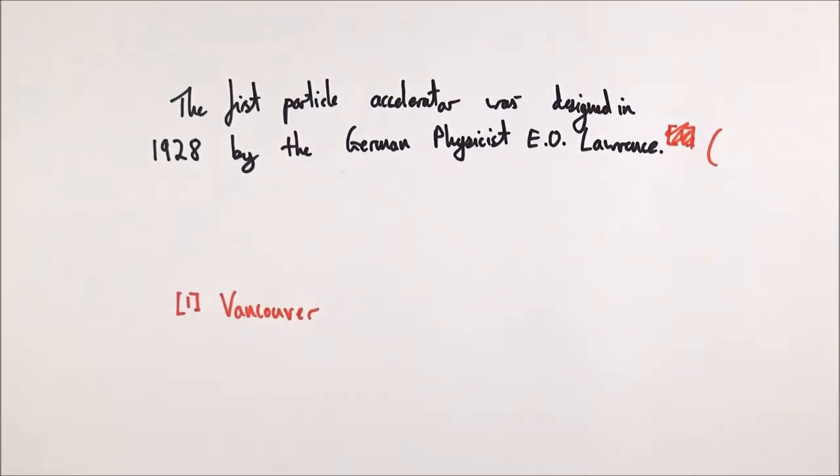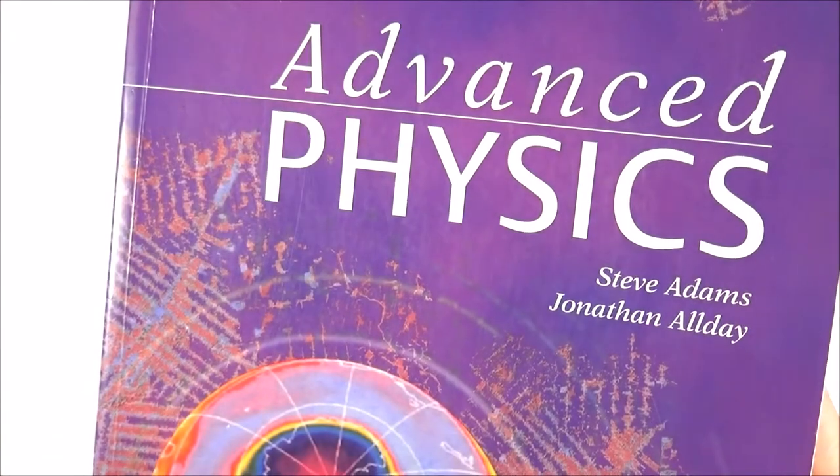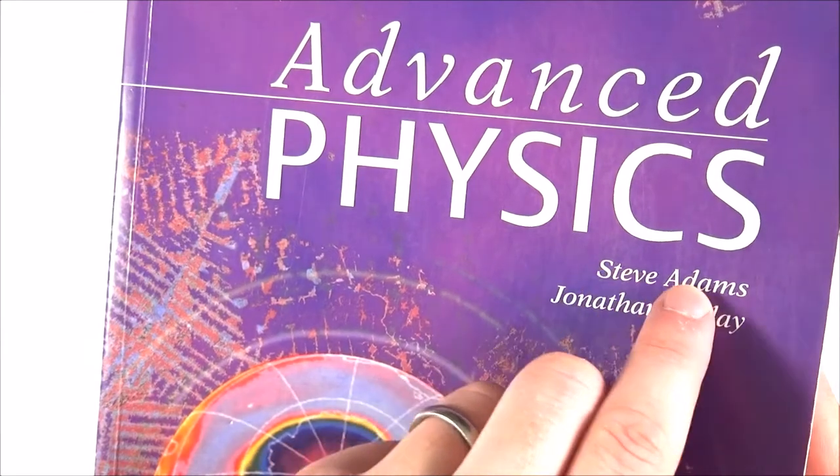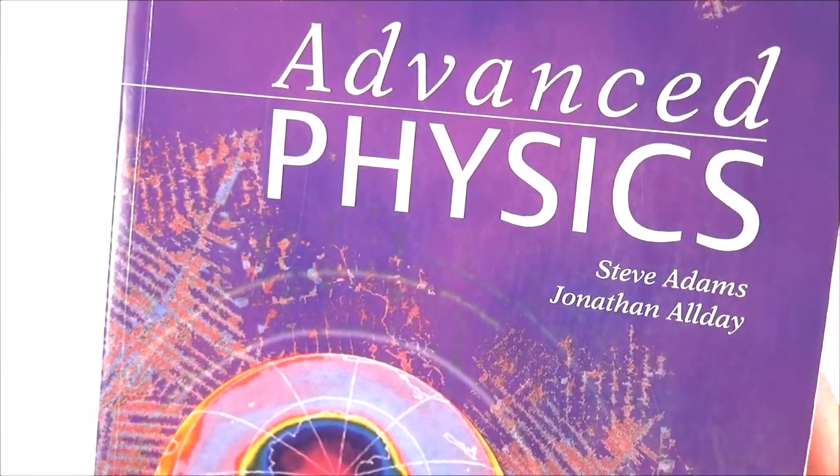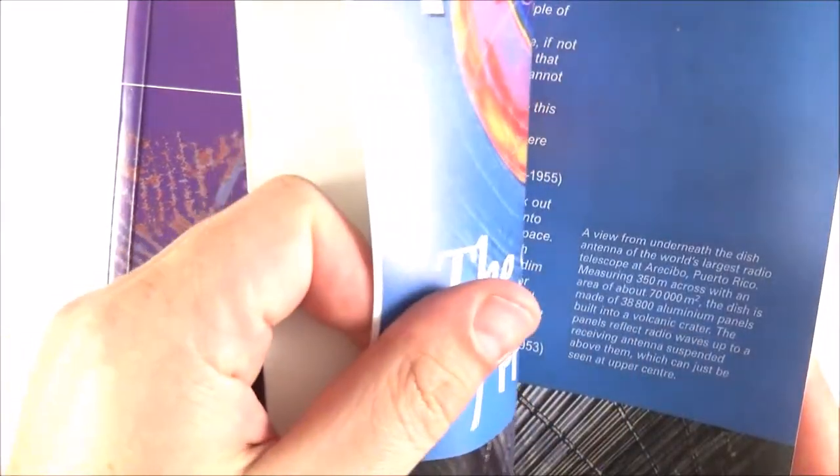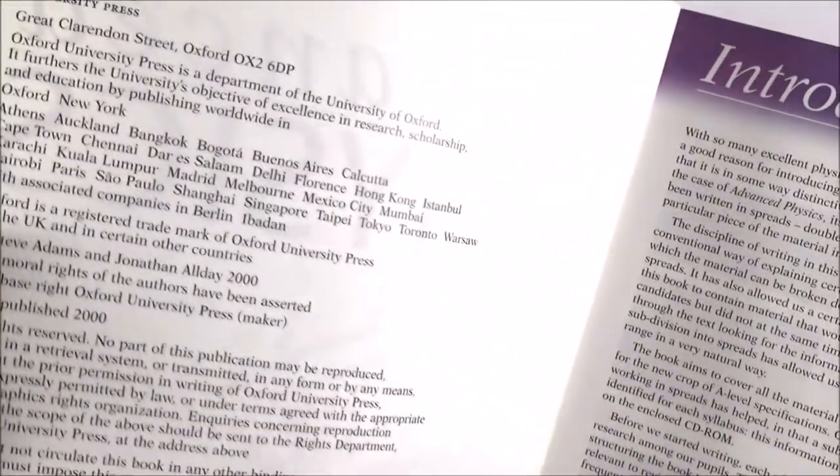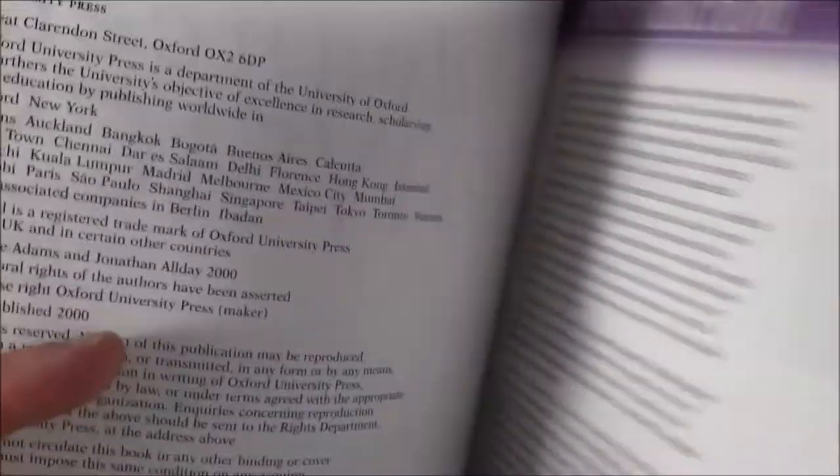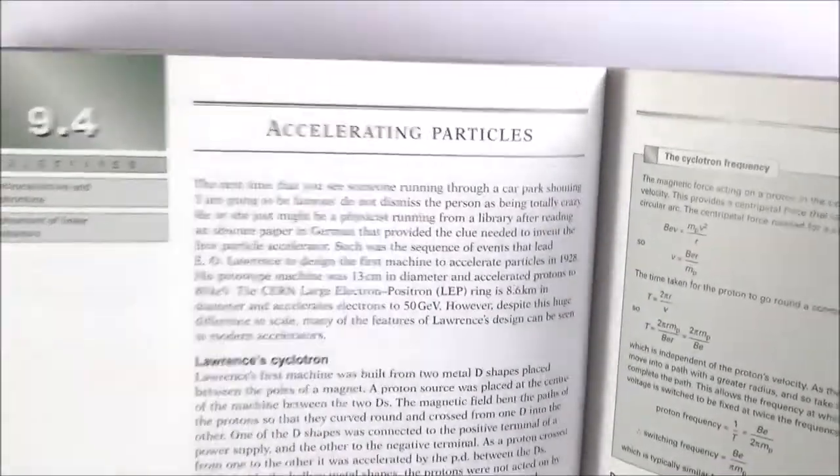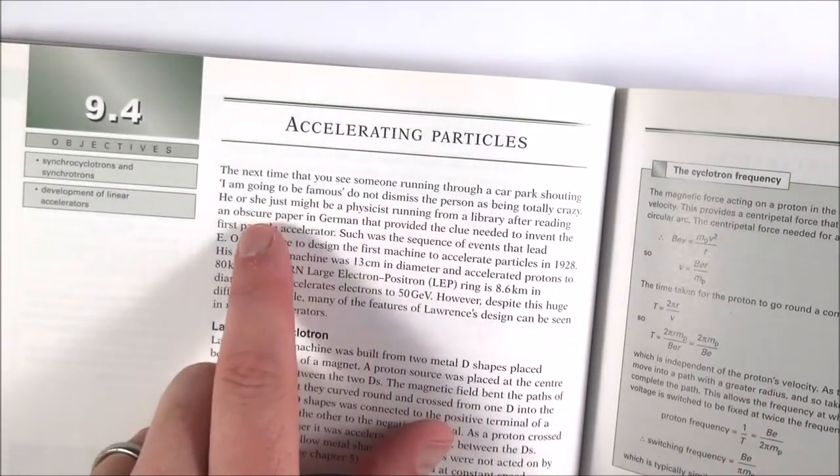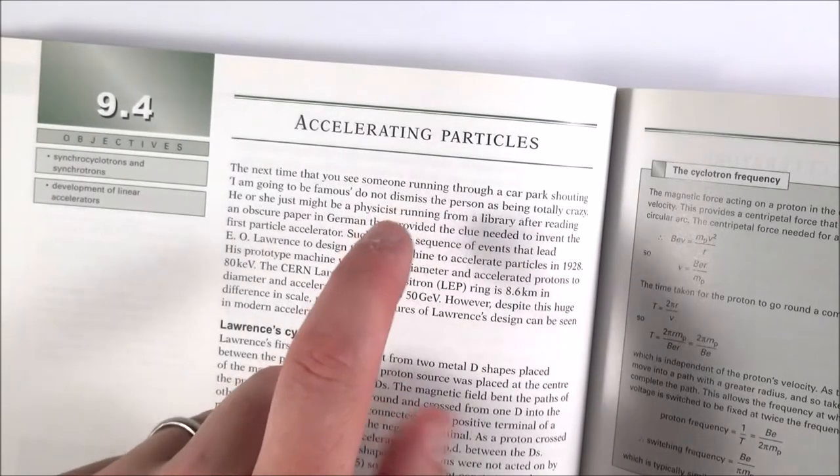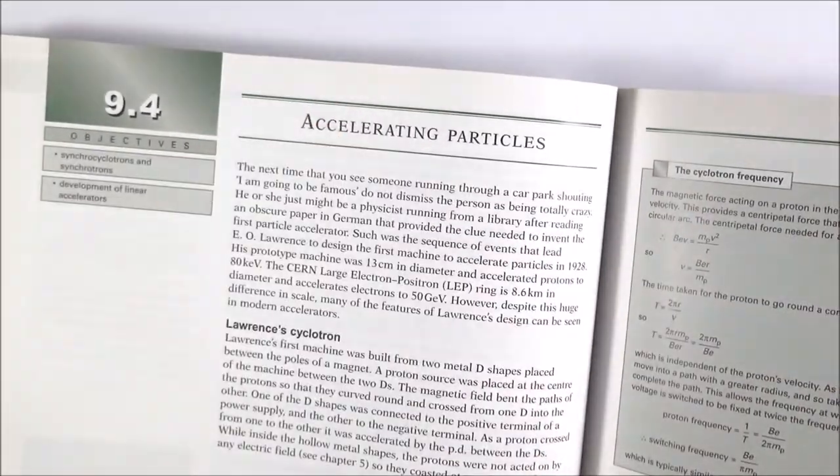So this information actually came from one of my favourite books by a guy called Steve Adams, it's called Advanced Physics. It's quite old now but actually there's lots of really good stuff in it. Written by a couple of people, what I'm going to use is just the first author's name which is Steve Adams and I looked at when this book was actually published and I found that on the inside it says it was first published and this edition was from 2000. And actually within the book itself here, this is where I found out the information about this guy saying he's going to be famous, E.O. Lawrence, and it's talking about 1920 and designing that first particle accelerator so this is my source of information.